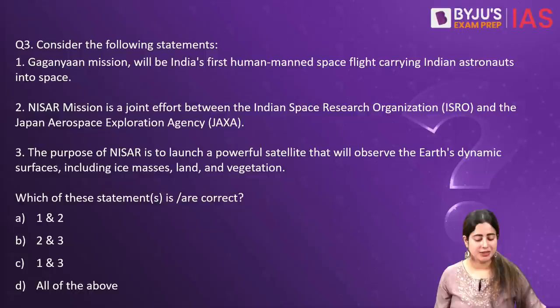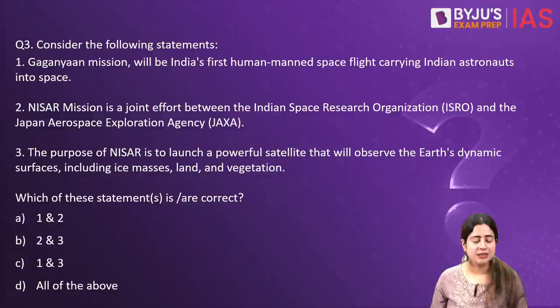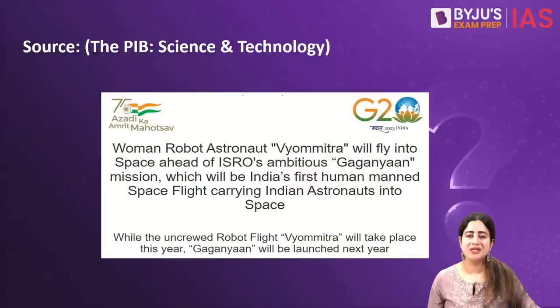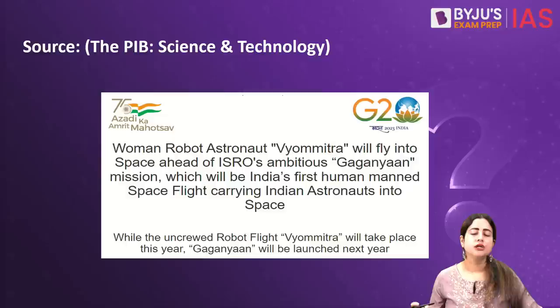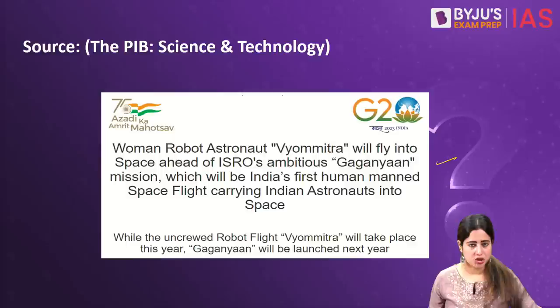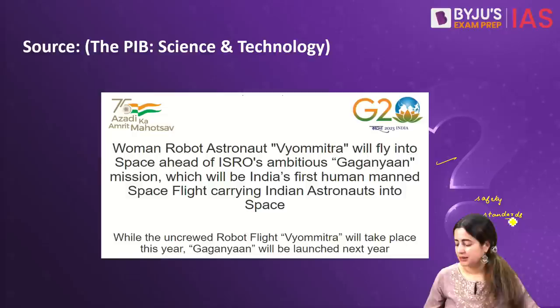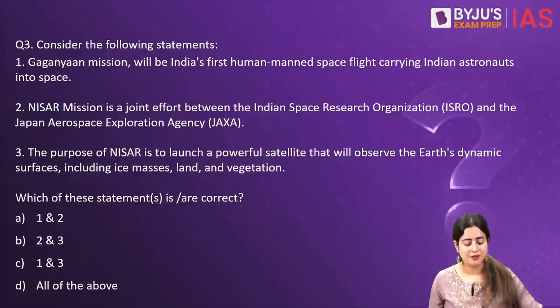The third question talks about the Gaganyaan Mission, which is all over the news right now. The reason this question was chosen is a PIB release about VyomMitra. VyomMitra is the female-looking humanoid robot that will be sent by ISRO to space. The purpose is to check on the preparations, the safety standards, and reliability of the apparatus that will later be used by astronauts as part of India's Gaganyaan Mission. It is like a preparatory initiative.